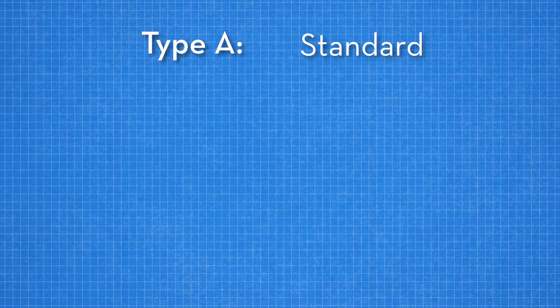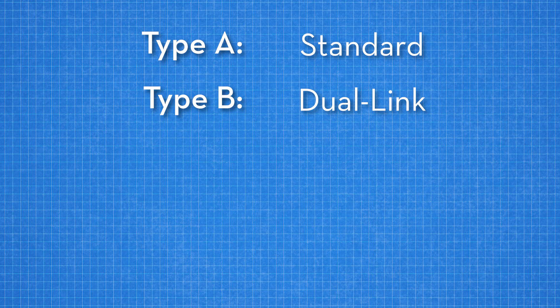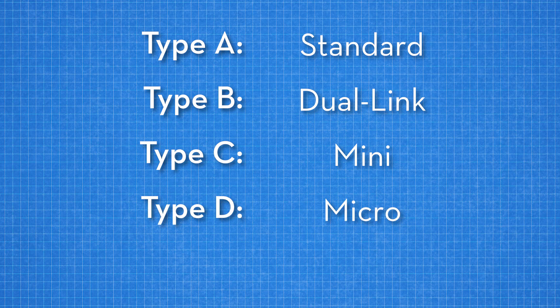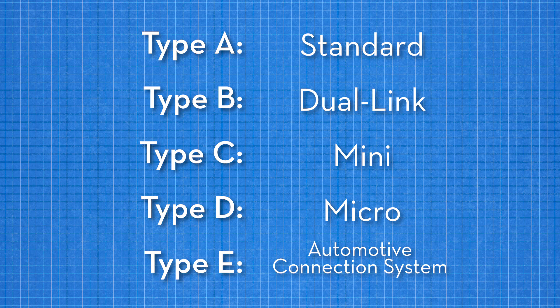Type A is the standard one — this is the one you're definitely familiar with already. Type B is referred to as dual link, and I'll get to this one later; it's one of the more interesting ones. Type C is the mini HDMI. Type D is the micro HDMI. And type E is another interesting one — the automotive connection system. Very rare.